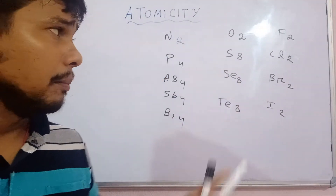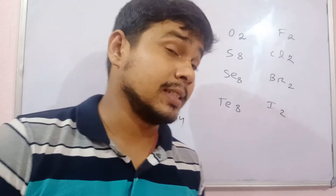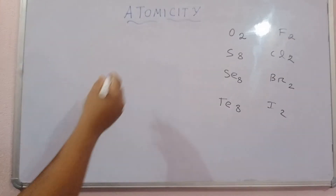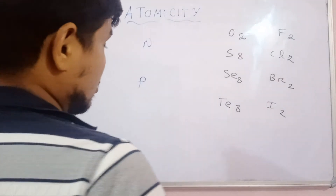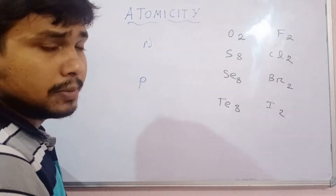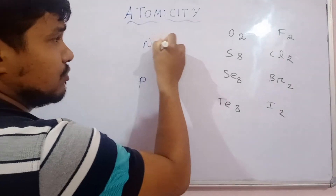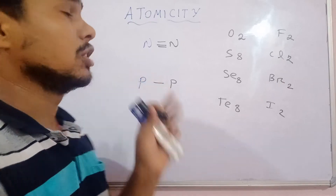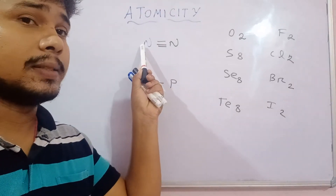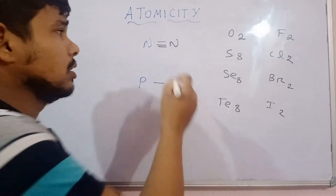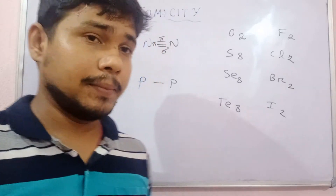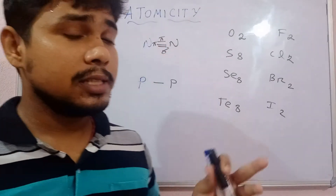Why is nitrogen diatomic whereas phosphorus is tetraatomic? Nitrogen has a valency of 3 and phosphorus also has a valency of 3. Nitrogen can form three bonds with another nitrogen atom — that's good. But phosphorus only forms a single bond with another phosphorus. What is the reason? Because of the small size of nitrogen, it can form three bonds.